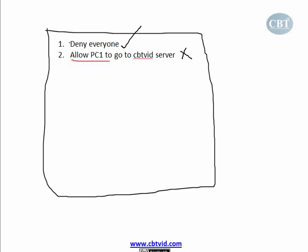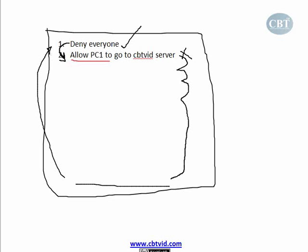That's why putting the more general rule on top is a problem. The router always starts from the top of the list and goes through it one by one. If it can't find a match with the first rule, it goes to the second, then the third, and so on. If you put something at the top that should be at the bottom, the router will never check the other rules.